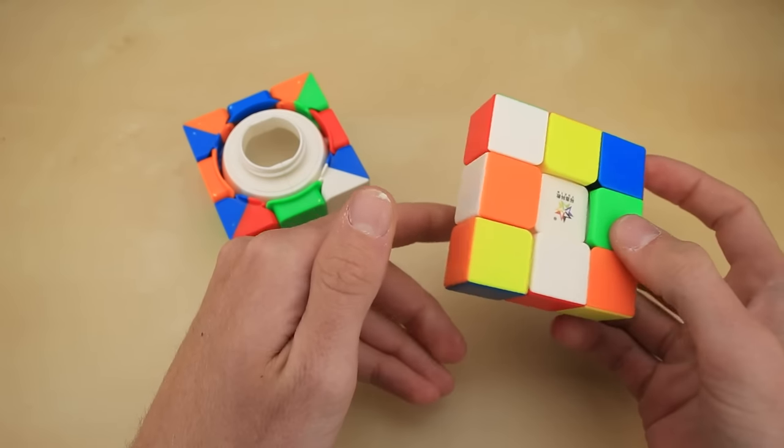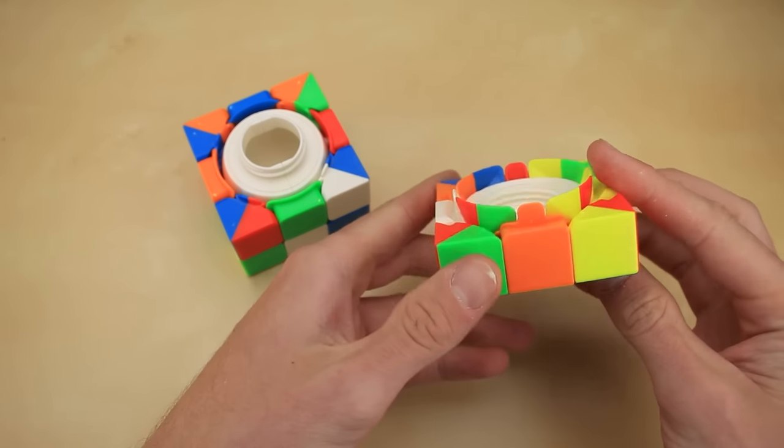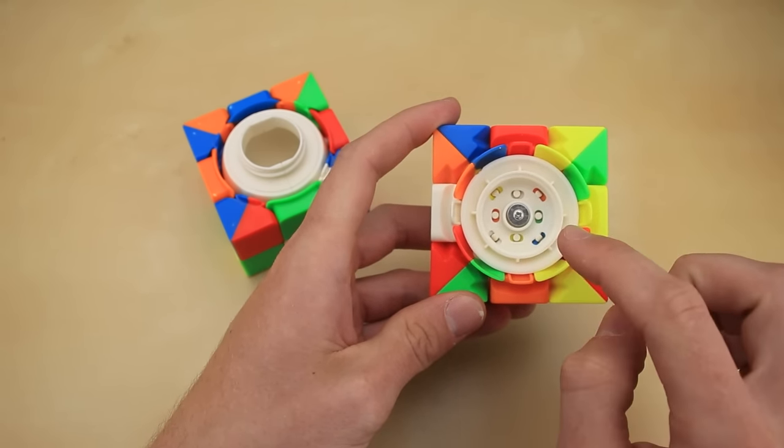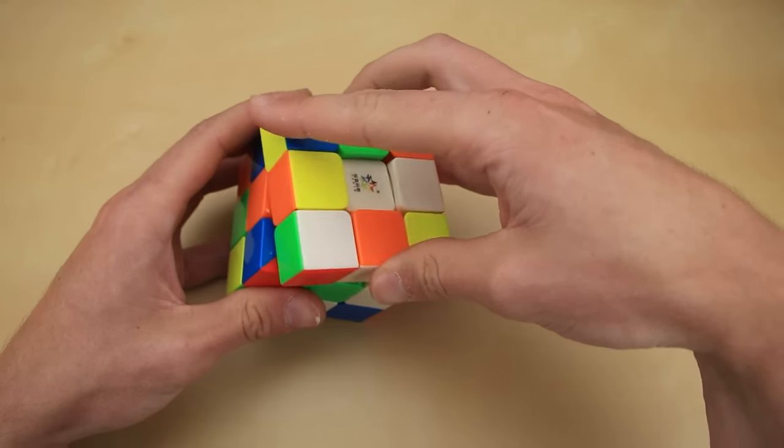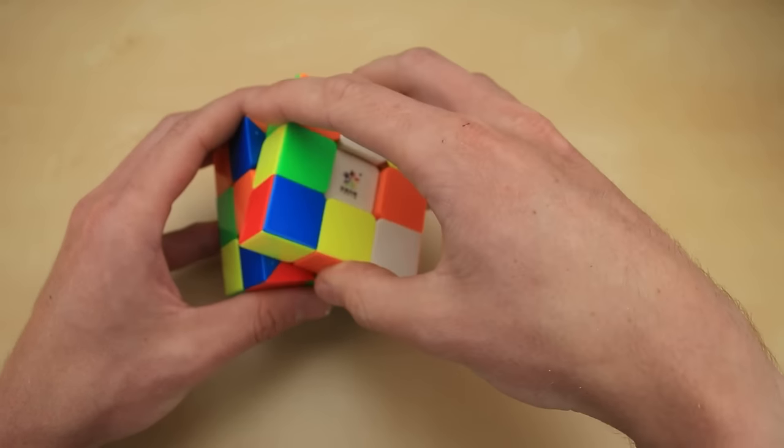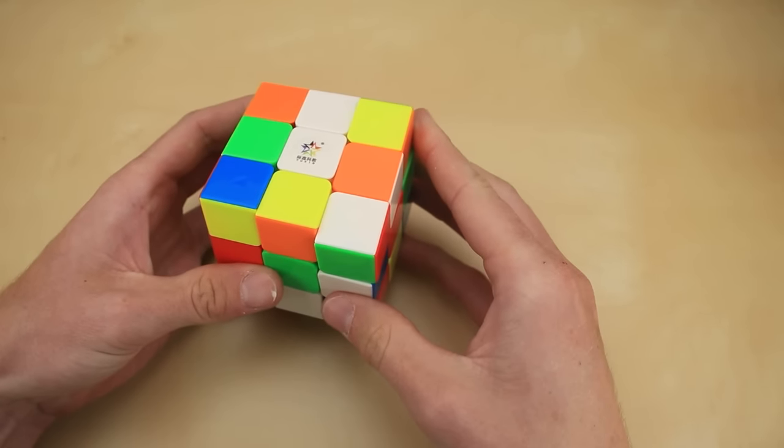Now with the top layer assembled, I can tell that the pieces are wobbling around a little bit more than they were before. I think that's because the holes I drilled were a little bit bigger than the original ones, but that shouldn't affect the turning at all once the cube is assembled. So let's go ahead and screw it back in, just like that, and now we can pop that center back into place.